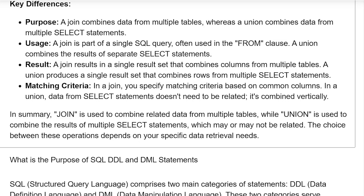Matching criteria: in a join, you specify matching criteria based on common columns. In a union, data from SELECT statements doesn't need to be related — it is combined vertically. In summary, join is used to combine related data from multiple tables, while union is used to combine the results of multiple SELECT statements, which may or may not be related. The choice between these operations depends on your specific data retrieval needs.